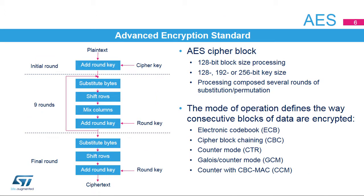Advanced Encryption Standard works on a block of 128 bits. Encryption or decryption can be done using a key of 128, 192, or 256 bits. A full block operation is composed of several rounds of substitution and permutation. The diagram shows the operations for an AES encryption using a 128-bit key. Successive blocks can be chained following several operating modes, described in the next slides.